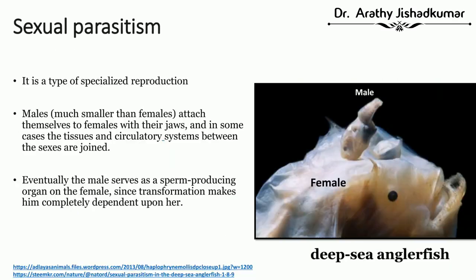The third category is sexual parasitism, usually observed in deep-sea anglerfish. In these fish, females are huge and males are small. The male attaches or anchors itself into the female body using its jaw and sometimes connects its circulatory system with the female, eventually acting as a sexual organ for the female and depending completely on the female for its existence. This is called sexual parasitism.